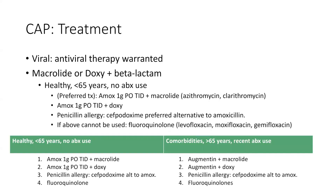And this is my way of simplifying things for you. Community-acquired pneumonia treatment: viral gets antiviral therapy, clearly. But if we're thinking drugs, it's your macrolide or doxy plus a beta-lactam. So let's talk about it.